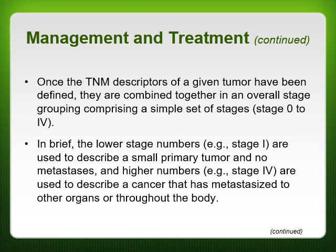Once TNM descriptors are defined, they're combined into an overall stage grouping from stage zero to stage four. Lower stage numbers like stage one describe a small primary tumor with no metastases — it's localized. Higher numbers like stage four describe cancer that has metastasized to other organs throughout the body, indicating much more severe, invasive, and significant impairment and effects on the entire body.